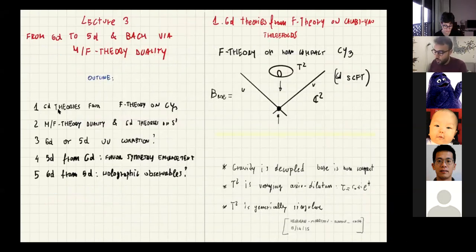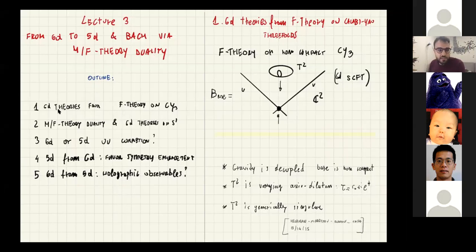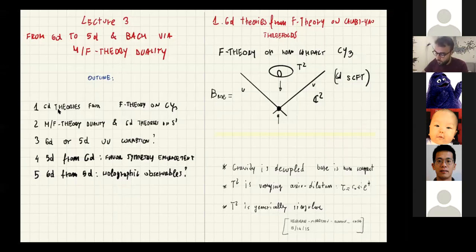The outline of this lecture: we start by briefly reviewing 6D theories from F-theory, then I will talk about this MF theory duality and in particular how it relates to 6D theories on a circle. Then I will explain how geometrically a 5D theory has a 6D or 5D UV completion. Finally, I will talk about some advantages of having this perspective, especially for 5D, where we can detect non-trivial properties like flavor symmetry of the superconformal point using this 6D/5D duality.